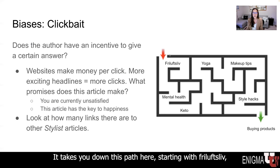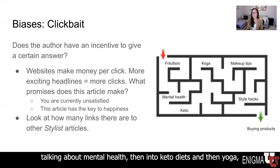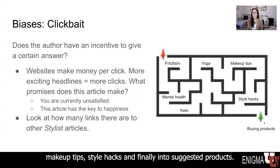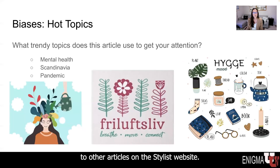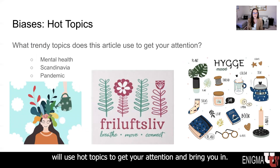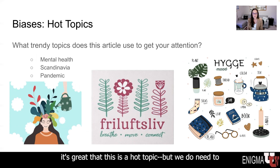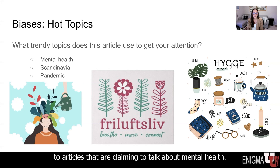The article takes you down this path, starting with friluftsliv, talking about mental health, then into keto diets, yoga, makeup tips, style hacks, and finally into suggested products. One thing to note is how many links there are in this article to other articles on the Stylist website. Frequently, articles will use hot topics to get your attention and bring you in. Some of the hot topics mentioned here include health and mental health — it's great that this is a topic, but we do need to take a critical eye to articles claiming to talk about mental health.